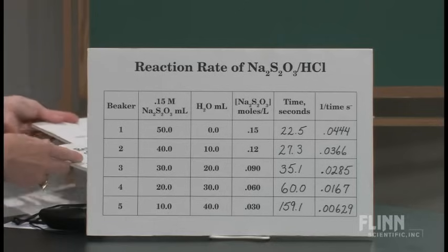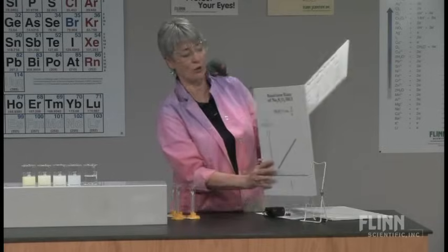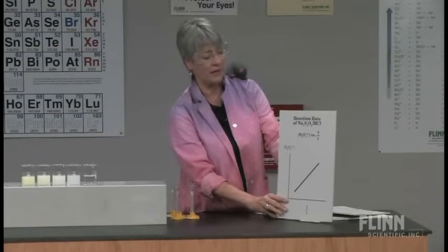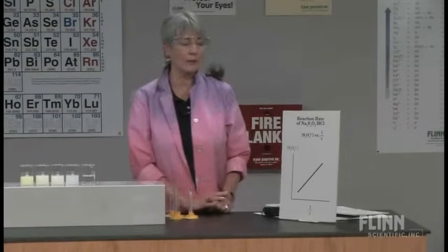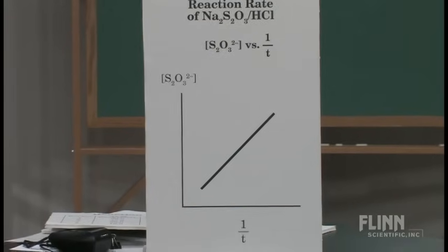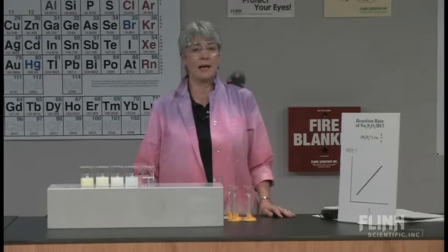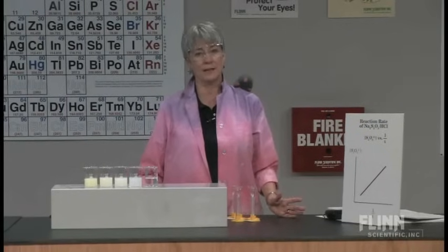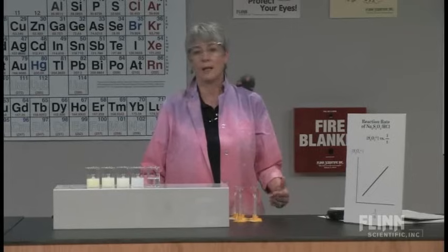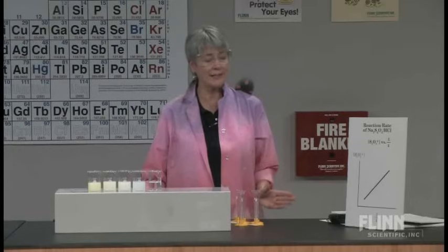It's easy for kids to do this now with graphing calculators. I show them how to make lists and use their graphing calculator, and they will get a linear relationship. You can talk about the fact that concentration in this case is directly proportional to rate. If you're teaching a class where you talk about rate constants, you can say this is first order with respect to concentration. Otherwise, you can just talk about the fact that it's an inverse relationship, but it's directly proportional.